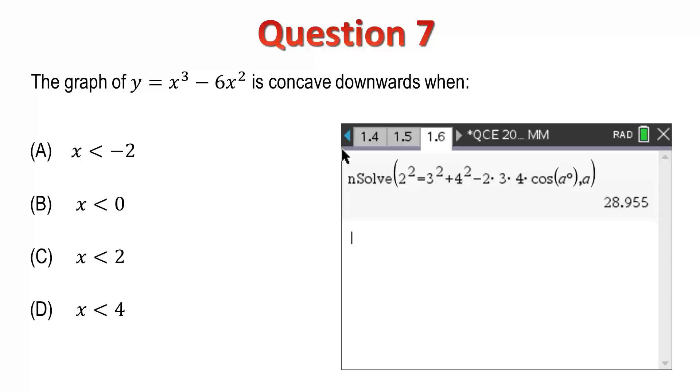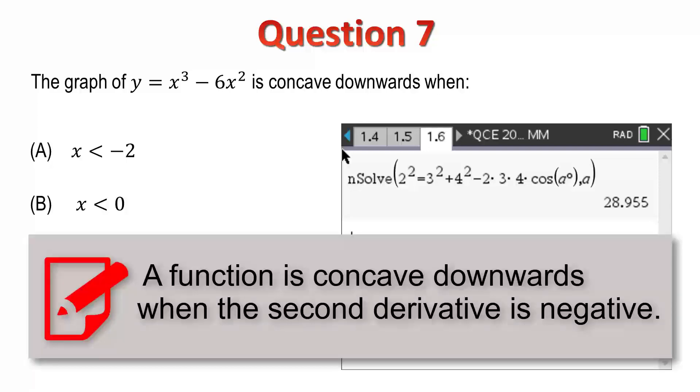Question 7. The graph of the function y equals x cubed minus 6x squared is concave downwards when? Now, we know from our notes that a function is concave downwards when the second derivative is negative. Now, whilst we can't solve for a range of values, we can use a graph.